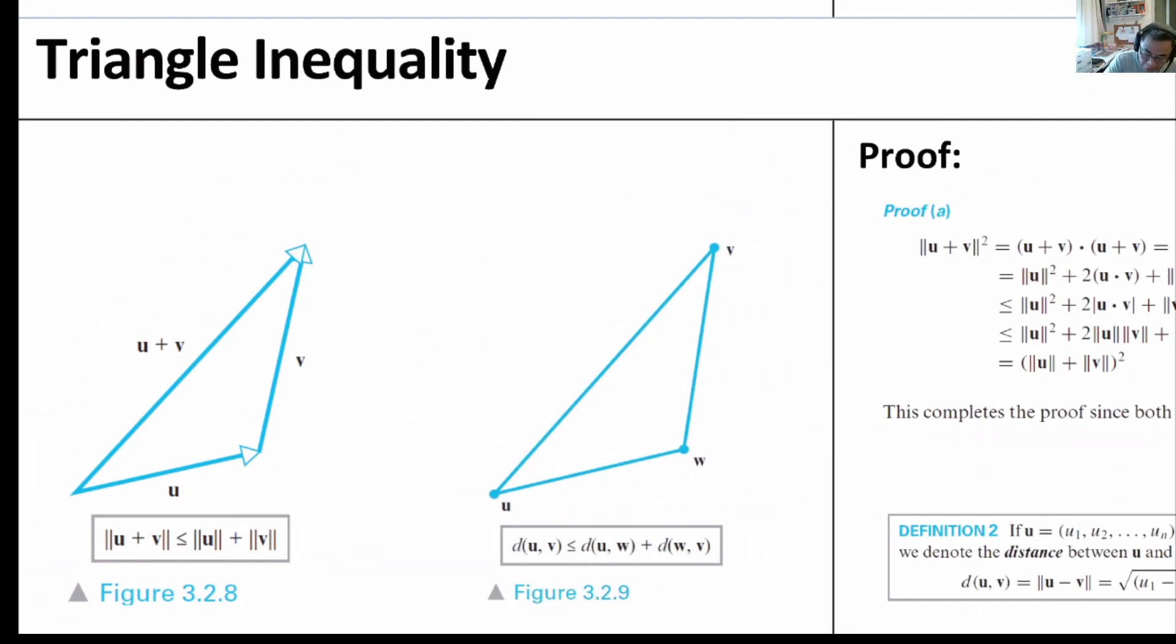The triangle inequality says that this length, the longest side of a triangle, its norm, basically the length, is less than or equals to the length of one of its sides plus the norm of the other side.